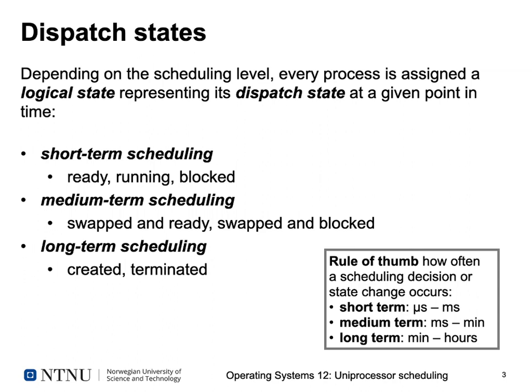We have processes in a ready state — they're just waiting for the CPU to be allocated to them. We have one process on a single processor system that's in the running state — it's currently using the CPU. And we have one or more processes in a blocked state, meaning they are waiting for the completion of some I/O operations they requested.